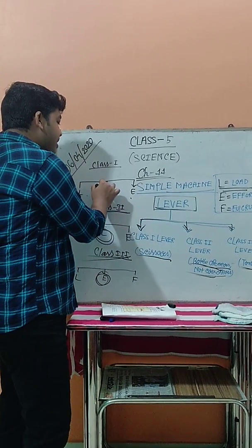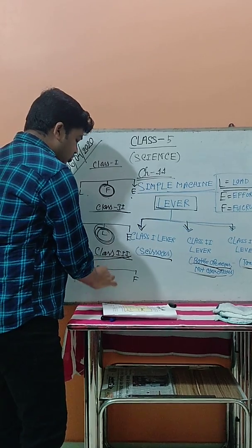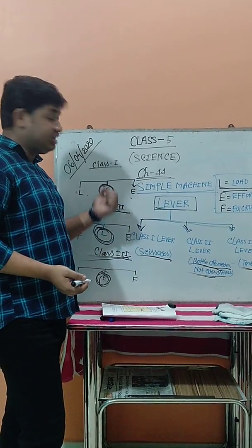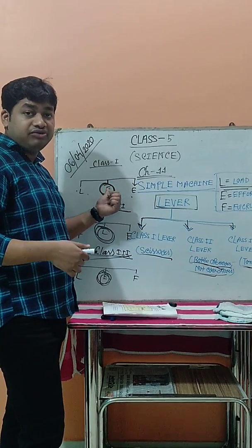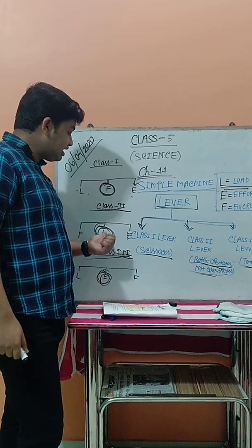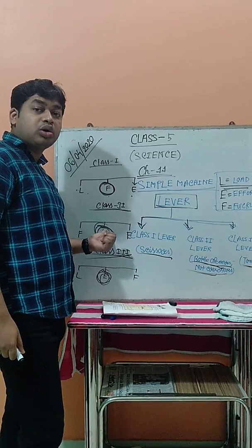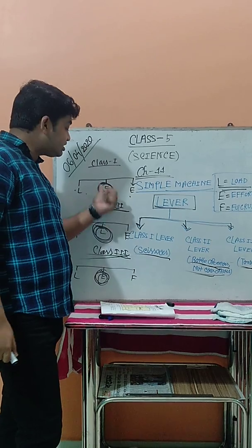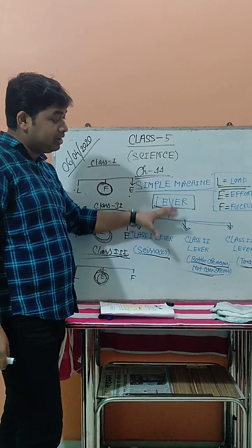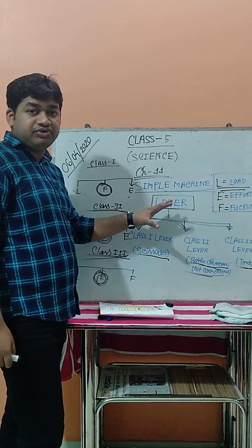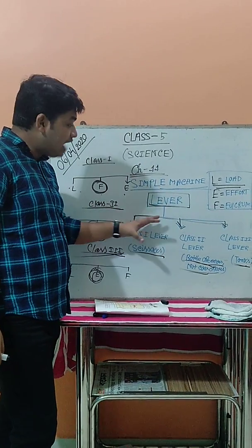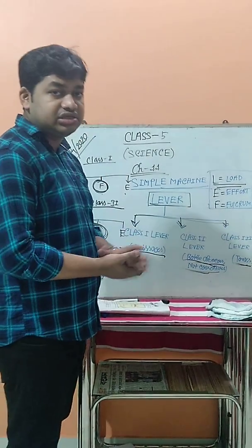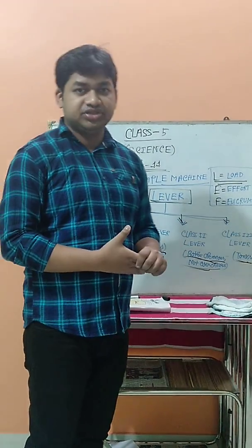One thing to notice is that only the middle portion changes for each type of lever. In Class 1, the fulcrum is in the middle. In Class 2, the load is in the middle. In Class 3, the effort is in the middle. By remembering what is in the middle, you can learn all three types of lever with their definitions and examples. Today we stop here; next day we will discuss more about simple machines. Thank you.